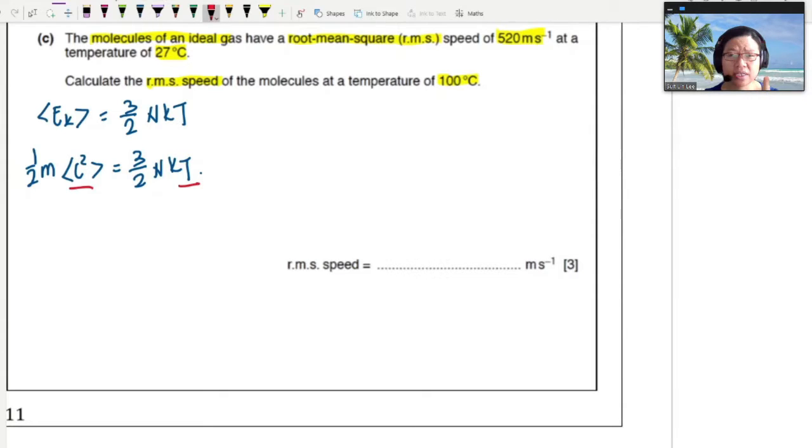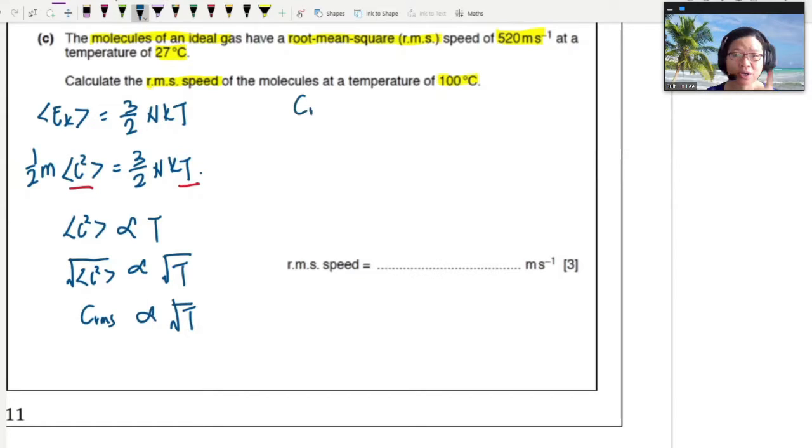And this will be half MC squared. So when kinetic energy or mean KE is half MC squared, so this is 3 over 2 NKT, you can see that C squared and T is directly proportional for the same gas molecule. So now we will take C squared, mean square speed is proportional to temperature. Then root mean square speed is proportional to square root of temperature. Sometimes we write it as CRMS.